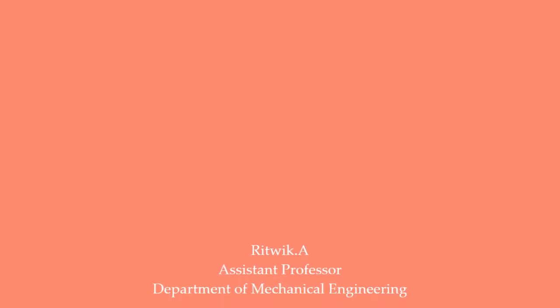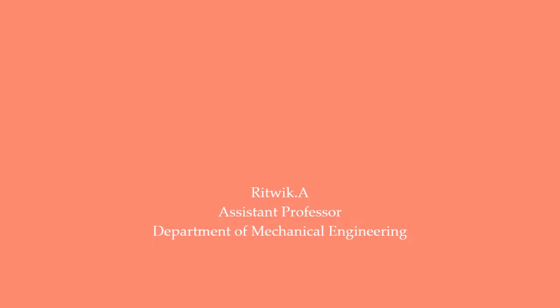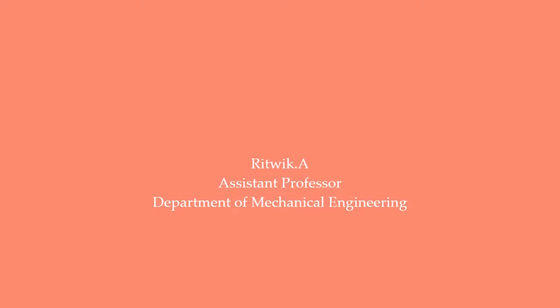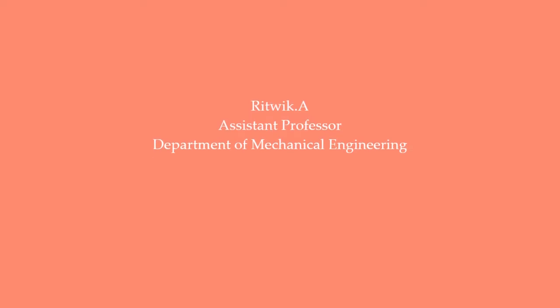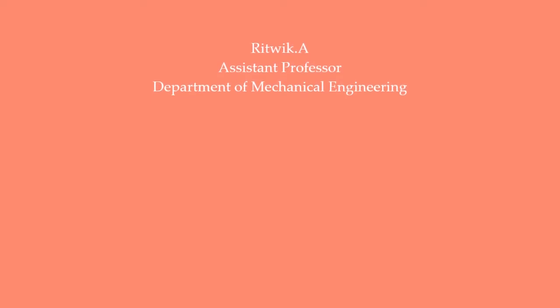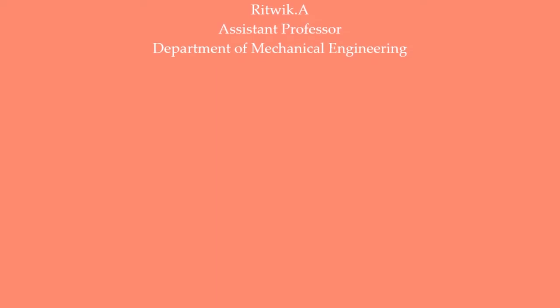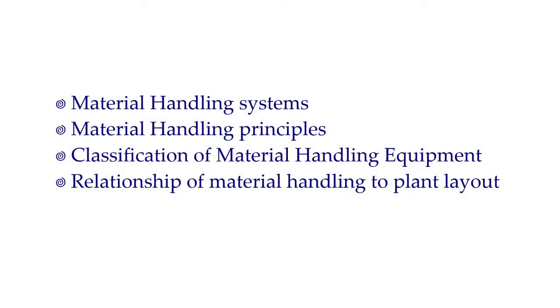Dear students, we are moving on to the fourth module of the subject Material Handling and Facilities Planning. The first three modules mainly concentrated on different aspects of facility planning regarding layout design, computer algorithms to automate facility layout design procedures, considerations for factory layouts, and benefits of a good facility layout. The remaining three modules mainly focus on the material handling aspects.